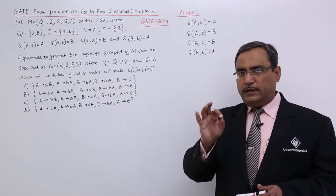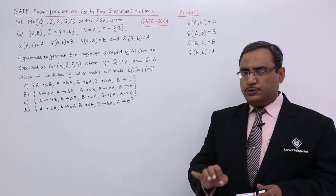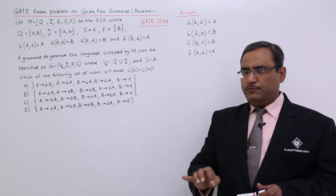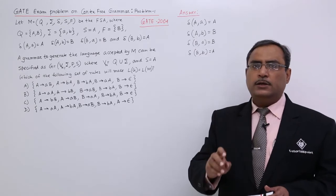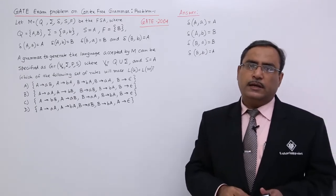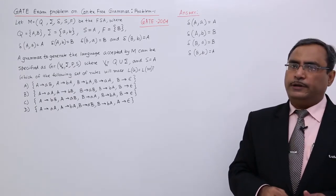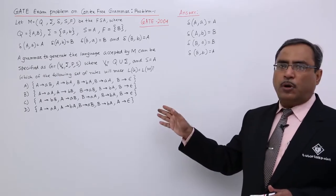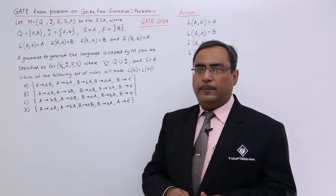Finite state automaton has been given and you shall have to find out the respective equivalent context free grammar. Here lies the problem. How to solve it? It is the typical type of problem, this sort of problems might be coming.